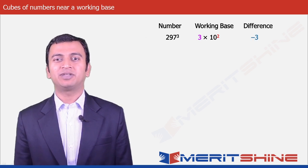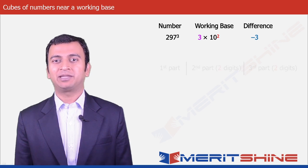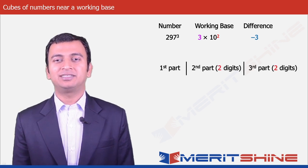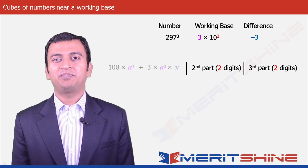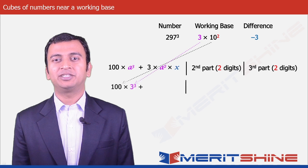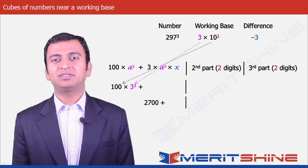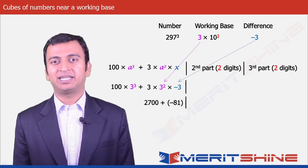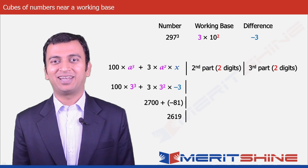Now we can proceed to write down our answer, which would be in 3 parts. The first part would be 100a³ plus 3a²x, giving us 100 × 3³ plus 3 × 3² × (−3) = 2700 minus 81, which gives us 2619.